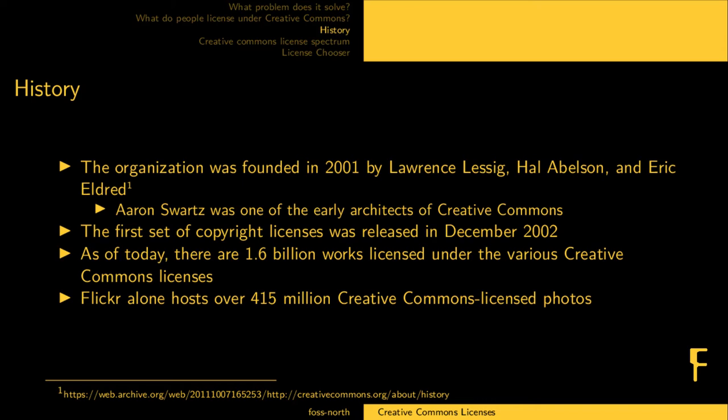Flickr stands out — they alone host about 415 million photos under the Creative Commons license, and they have a nice search for it. It's not a requirement; you can choose a normal license or one of the Creative Commons licenses. You can make it your default license when uploading to Flickr. Similarly, YouTube has a Creative Commons license option when you upload there, and our stuff on YouTube should be under Creative Commons as well.